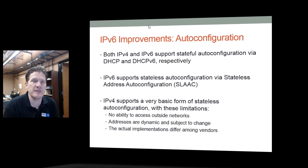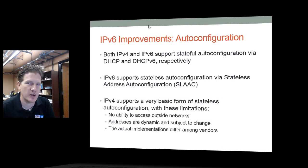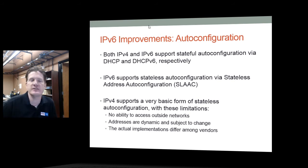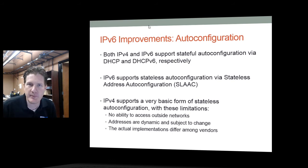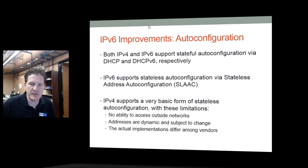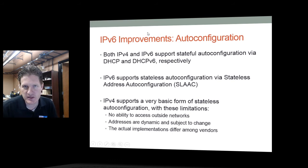IPv4 provided a very basic stateless auto-configuration called APIPA — Automatic Private IP Address Assignment — which assigned addresses out of the 169.254.x.x space. The problem was you couldn't access outside networks because you had no gateway, addresses were dynamic, and APIPA was implemented differently depending on the vendor. SLAAC improves upon stateless auto-configuration significantly, and we'll look at the difference between DHCPv6 and SLAAC in subsequent slides.